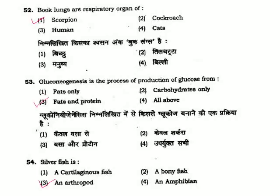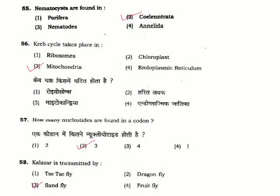Question 54: Starfish is — starfish is an arthropod. Option 3. Question 55: Nematocysts are found in — nematocysts are found in coelenterata. Option 2. Question 56: Krebs cycle takes place in — Krebs cycle occurs in mitochondria, and glycolysis in cytoplasm.